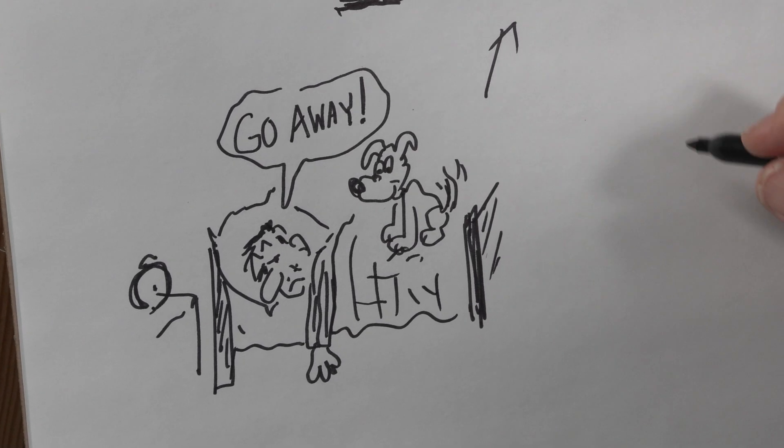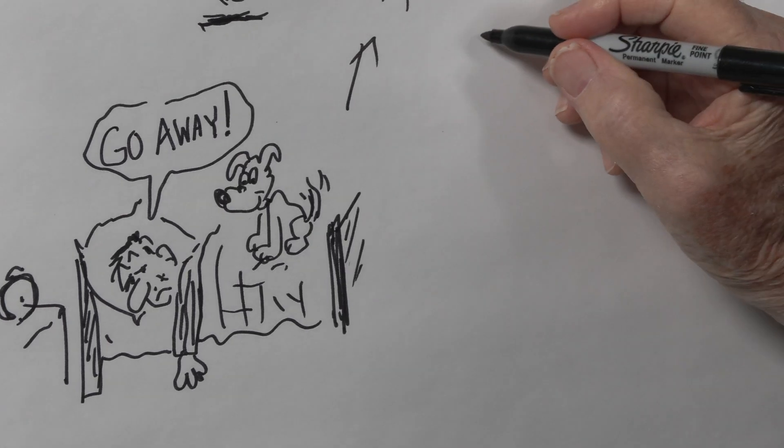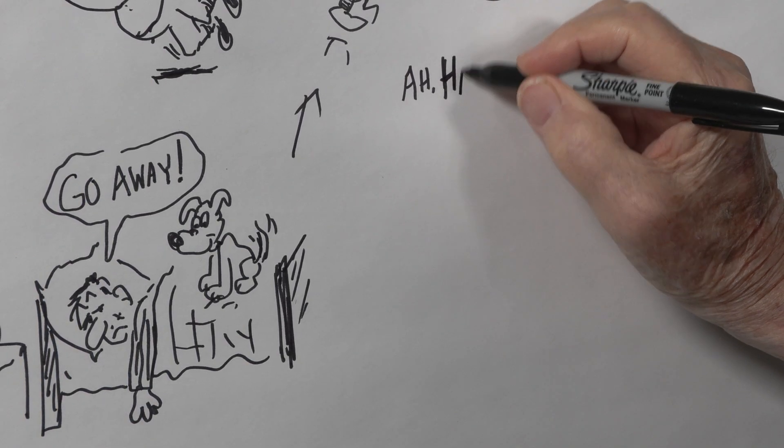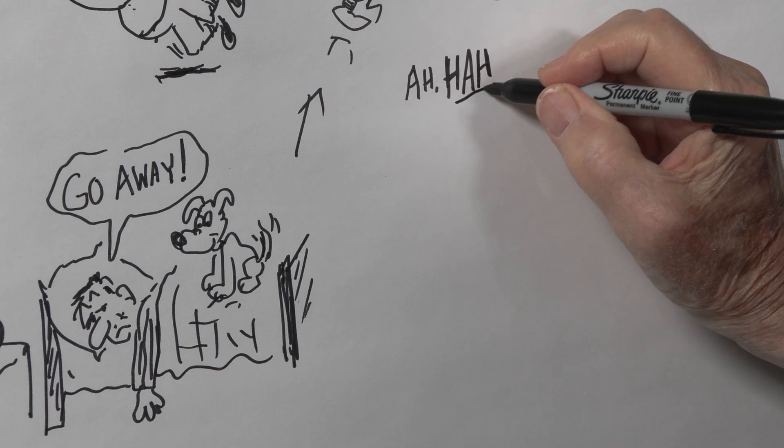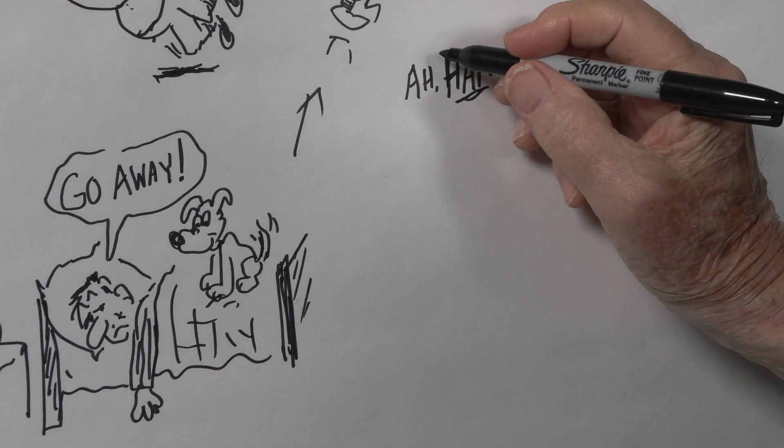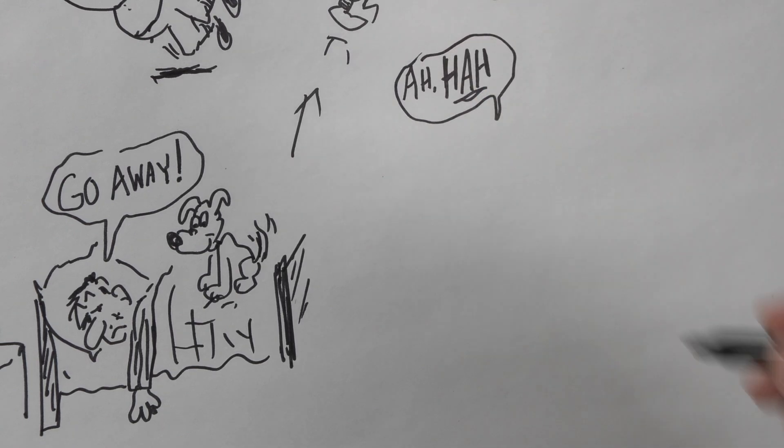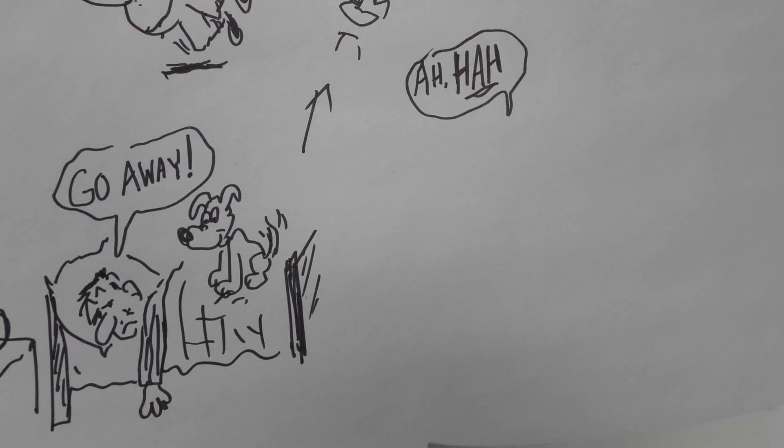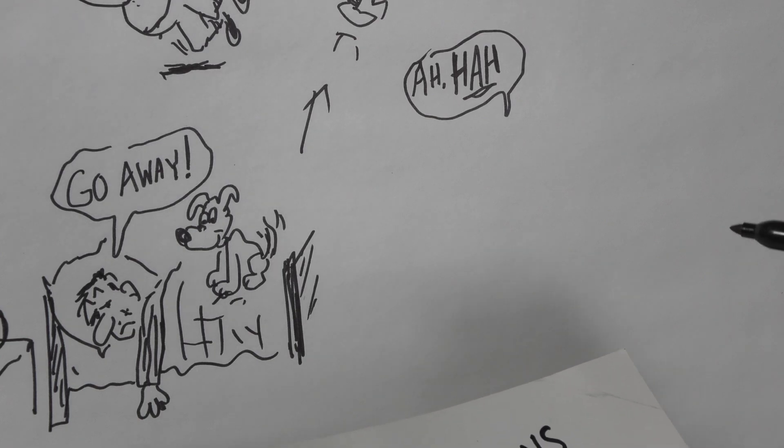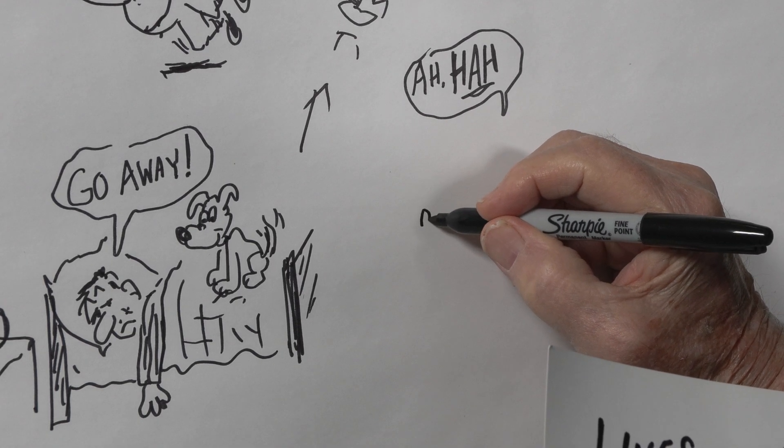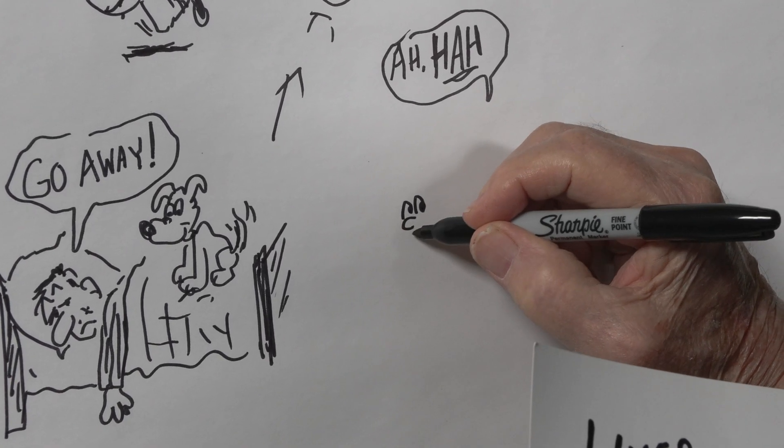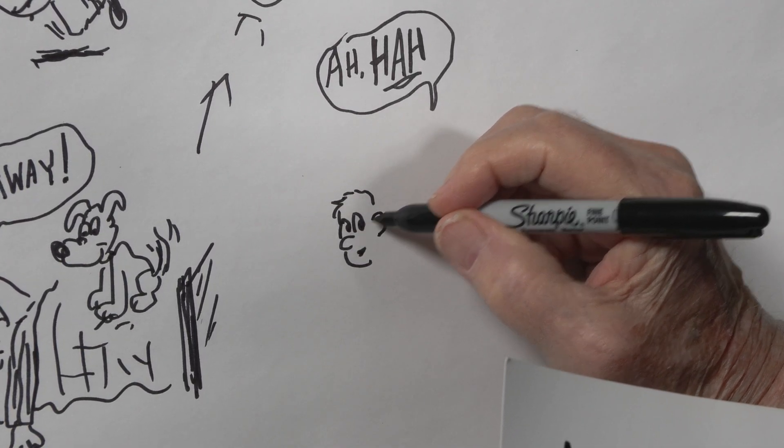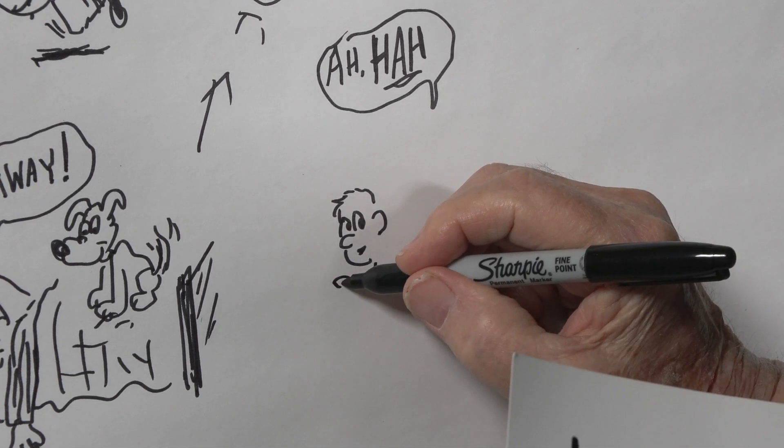Now this next one, ah-ha, and I put the ha like that to indicate that that's where the emphasis is. And to me that always indicates somebody is caught up with somebody else doing something they disapprove of. So let's see what's going on here.